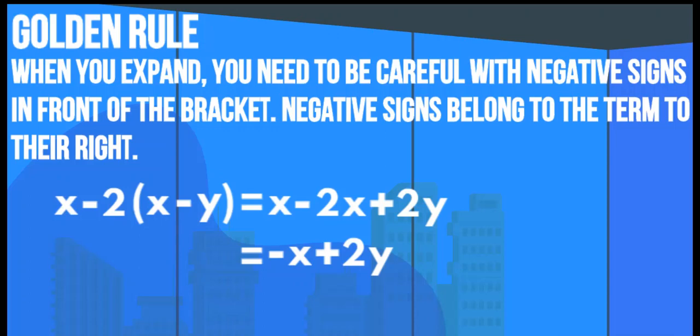Golden Rule: When you expand, you need to be careful with negative signs in front of the bracket. Negative signs belong to the term to the right. I've provided an explanation for this below.